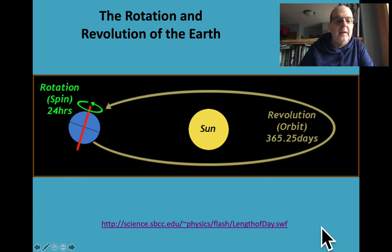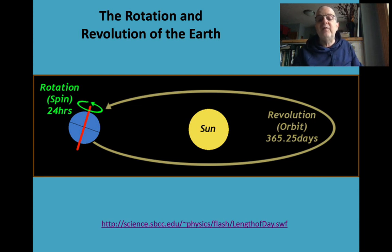We rotate once every 24 hours around our axis, which is tilted 23.5 degrees from a perpendicular drawn from the plane of the ecliptic. We revolve around the Sun once a year, takes 365.25 of these rotations.